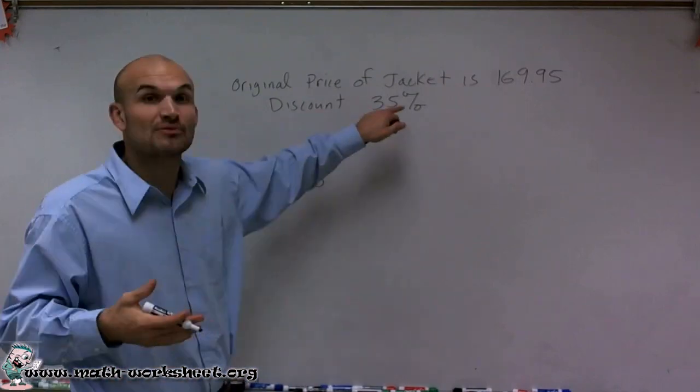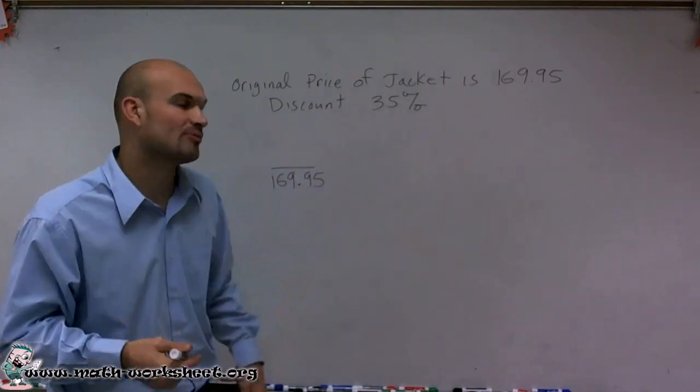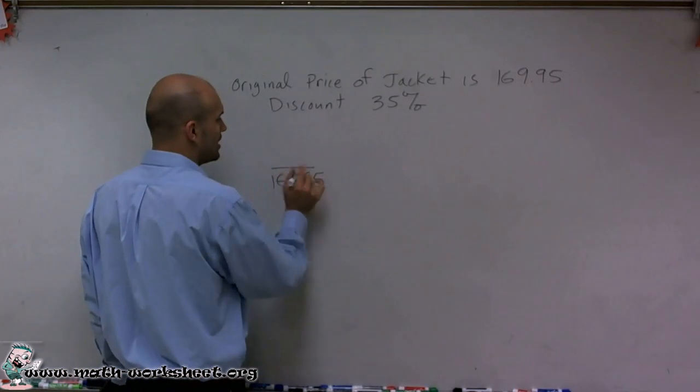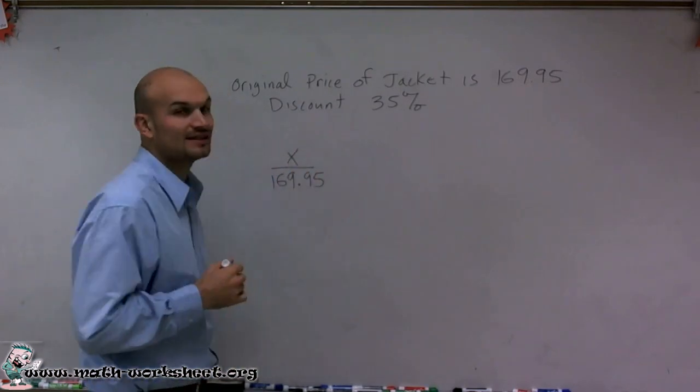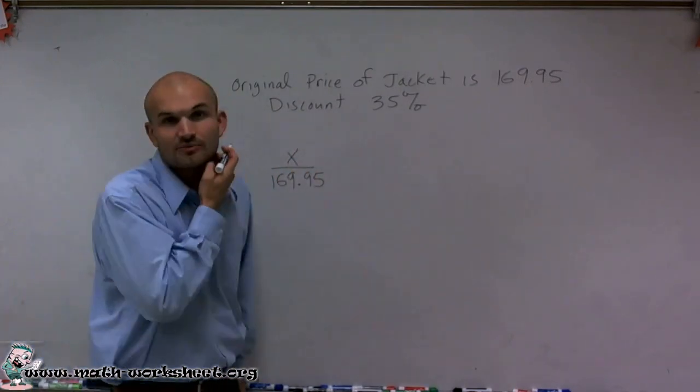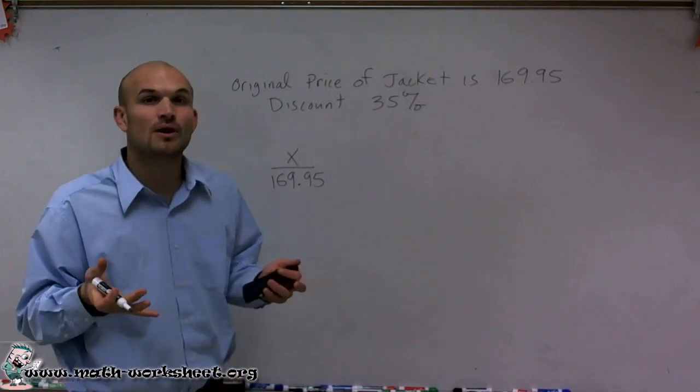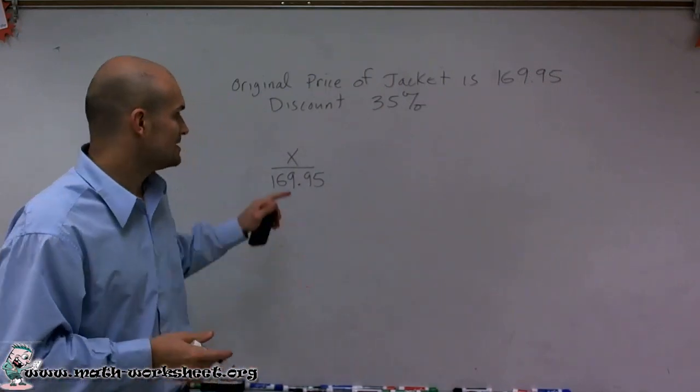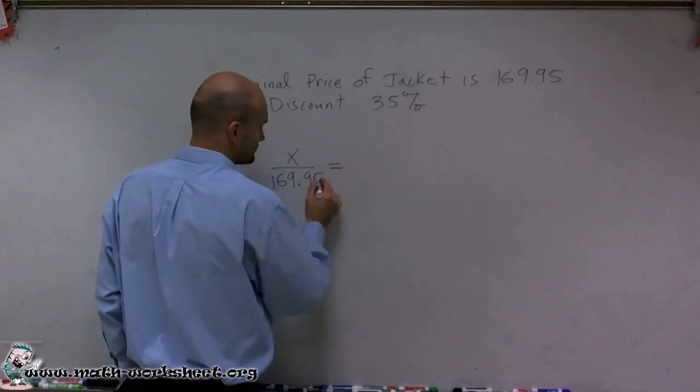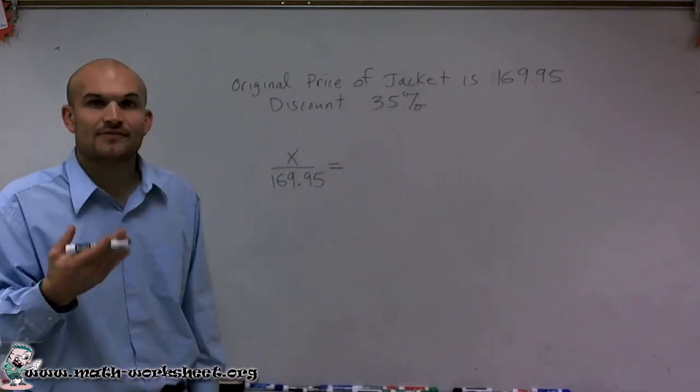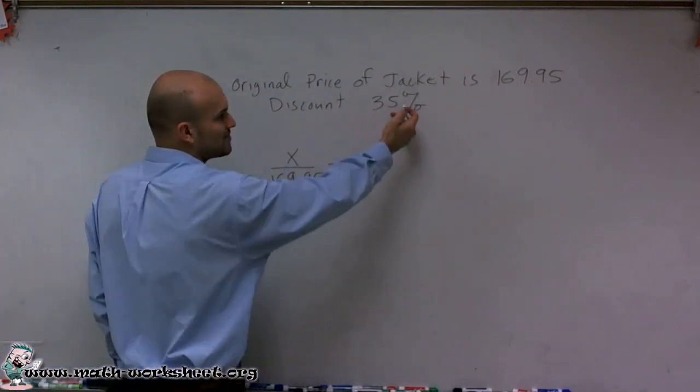We know what the discount percent is, but we don't know the discount price. So the discount price we're going to leave as our variable, where x is going to represent the value of our discounted jacket. Now that's going to be equal to our discount that we're going to have. It says it's 35% off.